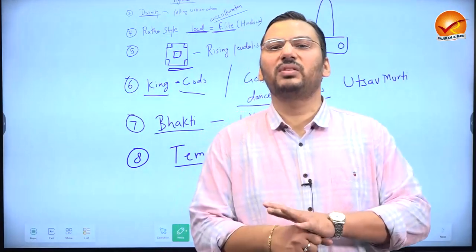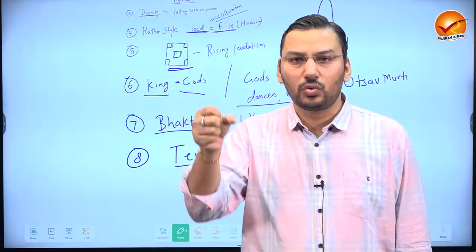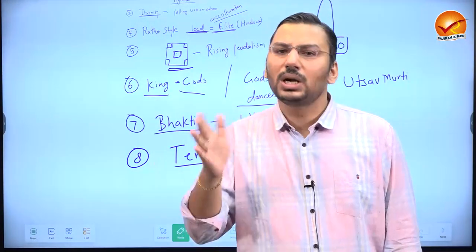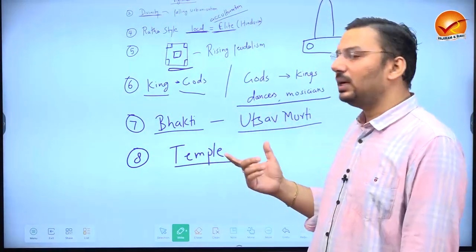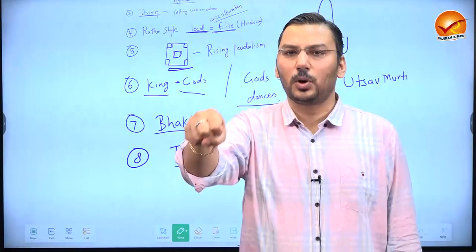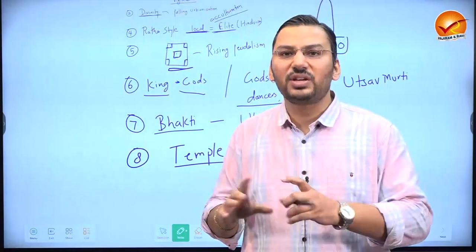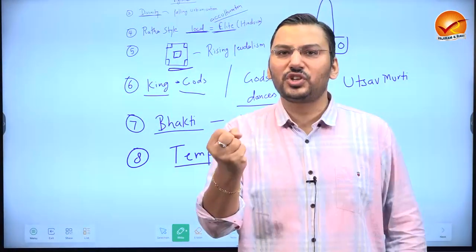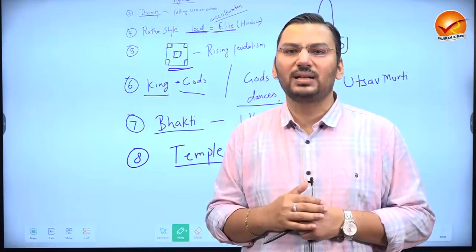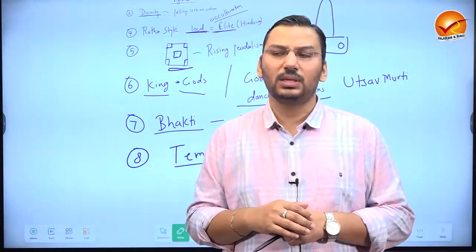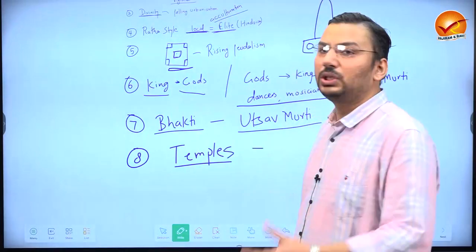The segmentary state model says that kingdoms without efficient revenue-based bureaucracy or a perfect army to control populations like a dictatorial state use ritual authority to control their kingdoms. In Africa, this model shows kingdoms using ritual authority or religion to govern populations more efficiently — similar to how communalism is used by right-wing governments today to control populations under the garb of religion. Segmentary state theory says ritual authority was used to control the population, and temples were the tool to do so.